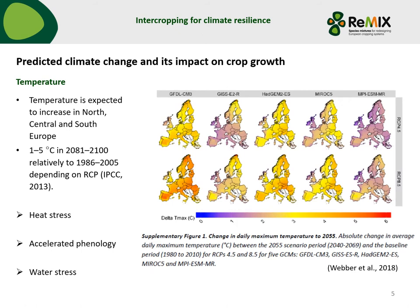Based on this predicted increase in CO2 equivalents, in Europe the temperature is expected to increase, and this increase is between 1 and 5 degrees in 2081 to 2100, depending on the representative concentration pathway. A higher temperature above the optimum can induce heat stress, accelerate phenology, and can also lead to water stress. In this figure you can see the daily maximum temperature in 2055 compared to a baseline scenario from 1980 to 2010.